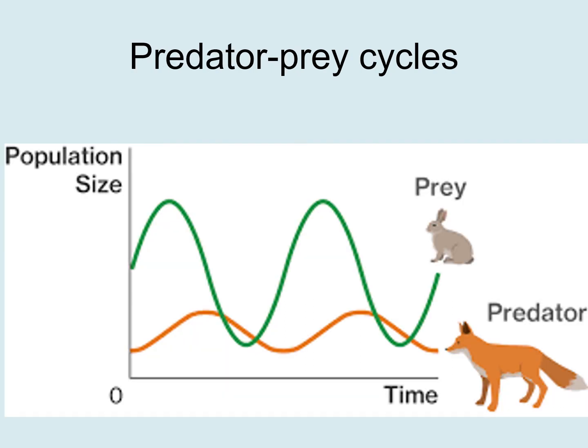The numbers of prey — the amount of food available for the predator — is going to affect how many predators survive. Now we've moved to talking about rabbits and foxes, but the same principles apply. On this graph the x-axis shows time and the y-axis shows population size. We start with some rabbits — it's springtime, there's plenty of food and space, and rabbit numbers increase.